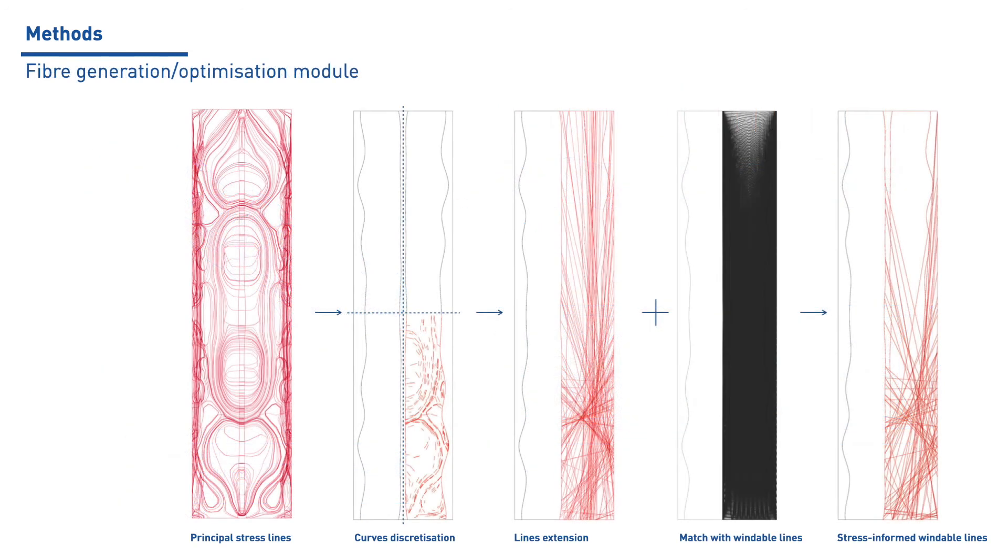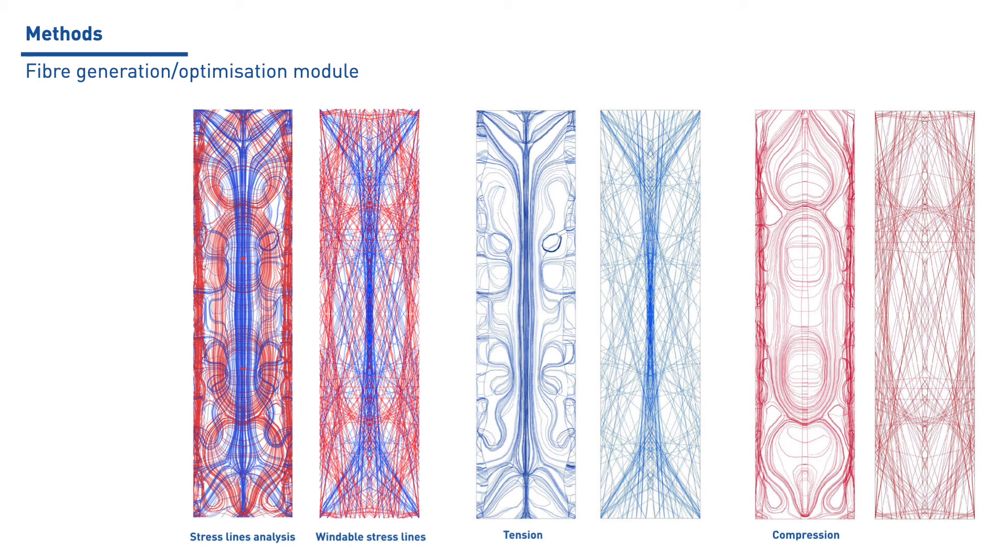For the infill surface instead, the curved trajectories of the principal stresses of the shell are translated into windable trajectories. This is accomplished by projecting the stress curves into a 2D plane, for later discretizing and extending them to the boundaries of the projected surface. The obtained lines are then matched with the possible windable trajectories and projected back to the 3D surface. This fiber pattern is thus revealed as a network of beam elements spanning from each fiber intersection and fed into a new FEA module.